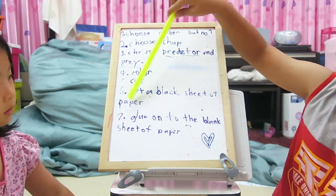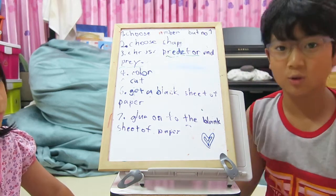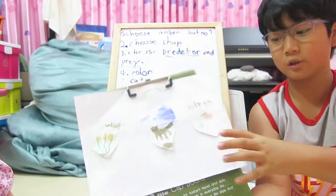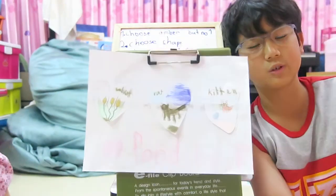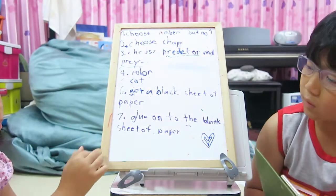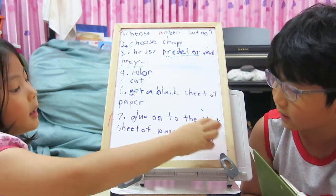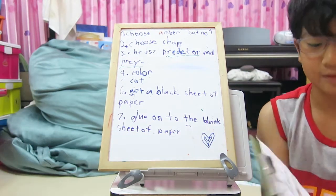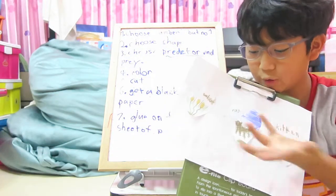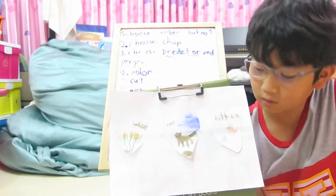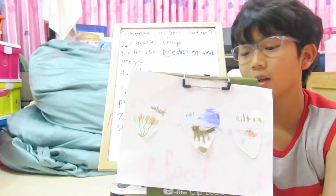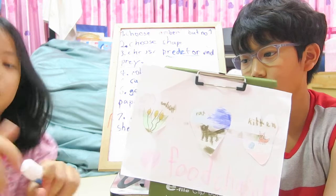Step six: get a blank sheet of paper. Or you could use paper that's already been used — like recycling. She used a blank, but that's okay — you could use a used one too. That'll be even better. Step seven: now glue everything onto the blank sheet of paper. See, she's glued the horn on it — but we used sticky tape because we couldn't find the glue stick. This is called a glue stick.